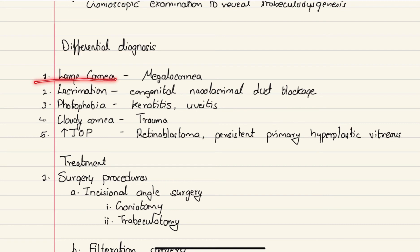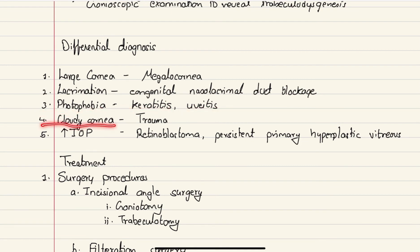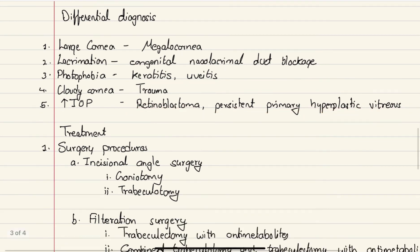For differential diagnosis: if there is a large cornea it could be megalocornea — a condition where the cornea is enlarged but intraocular pressure is normal. Lacrimation may be due to congenital nasolacrimal duct blockage, which needs to be ruled out. Photophobia might be due to keratitis or uveitis. Cloudy or hazy cornea — also a sign of congenital glaucoma — is most commonly caused by trauma. Increased intraocular pressure can also be due to retinoblastoma or persistent primary hyperplastic vitreous.